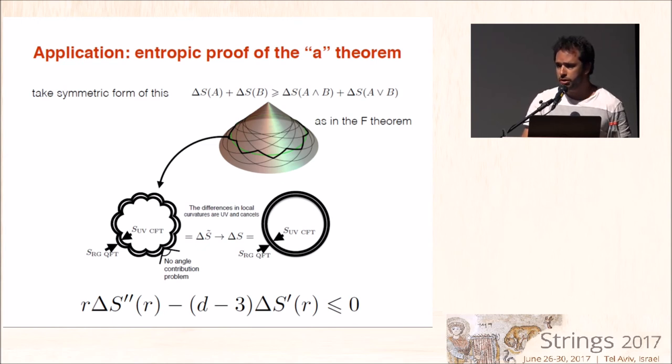You can compute the entanglement entropy using several regularizations. If you use the one that uses the mutual information, which has the property of being monotonic under inclusion of algebras, there is no such problem with gauge theories. You will obtain a good result without ambiguities.